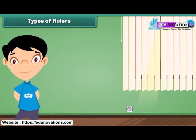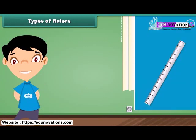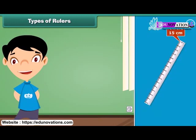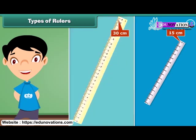A ruler comes in different lengths. The first ruler seen can measure length up to 15 centimeters. The second ruler seen can measure length up to 30 centimeters.